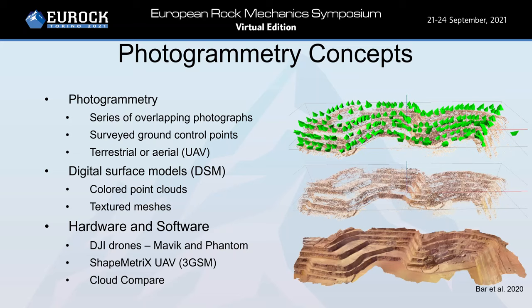The hardware and software required for undertaking photogrammetry include digital cameras, whether terrestrial or by UAV. In these cases, Mavic and Phantom drones by DJI were used. The software used was ShadeMetrix UAV by 3GSM and CloudCompare.